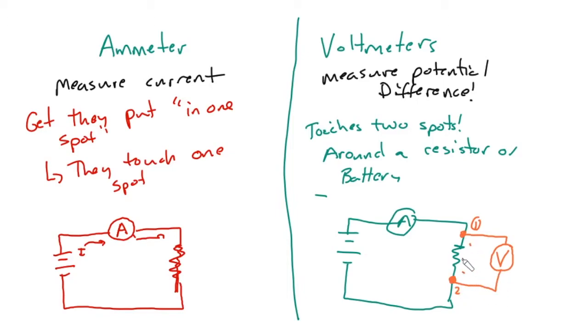Okay, so it's on either side. If I want to know the potential drop across the battery, here's spot number one, here's spot number two. A voltmeter gets placed around that just like so.